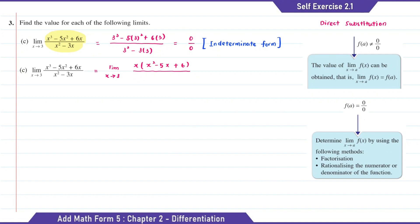And for the denominator part, the common factor is also x, then x bracket (x minus 3). So here we can cancel the x. Now for this part, we can continue to factorize it.